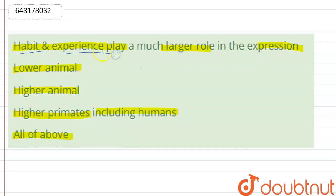So, we will tell you that habits and experiences play a much more important role in the expression. What are the expressions in lower animals? Lower animals and mammals are vertebrates. For higher animals, we have amphibians. Higher primates including humans. All of the above, that's all.